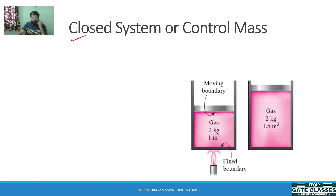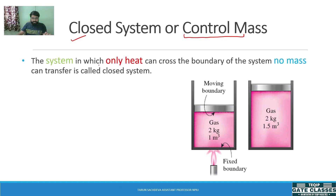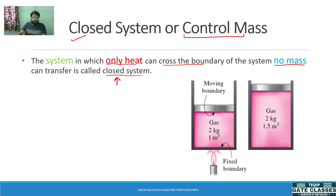First we will understand what is a closed system, also called control mass. Any system in which only heat transfer occurs and heat crosses its boundary — such a system is called a closed system. There is no mass transfer; no mass is crossing the boundary. That system is termed as a closed system.